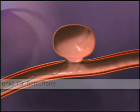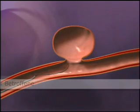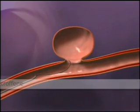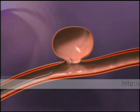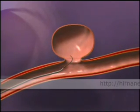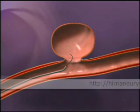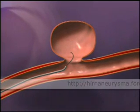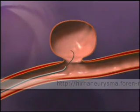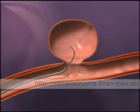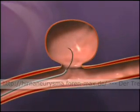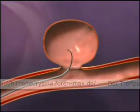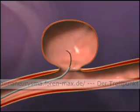Coil delivery and detachment. A guide wire is introduced into the artery and enters the aneurysm. Next, we see a shaped Boston Scientific Target two-tip microcatheter delivered into the aneurysm over the guide wire.